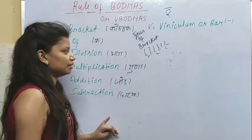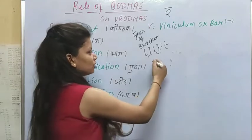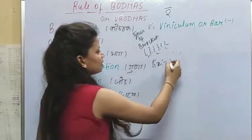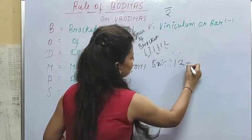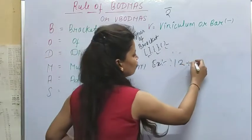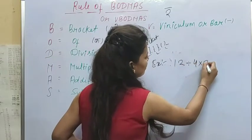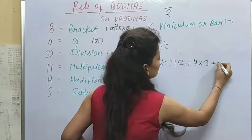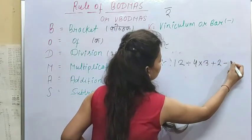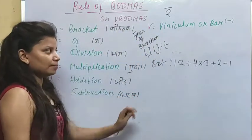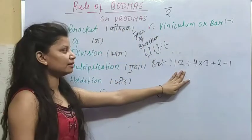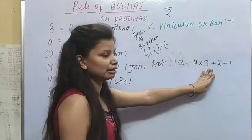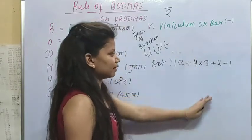If we see some examples, it will be easier to understand. Let me take an example. The expression is: 12 divided by 4, multiplied by 3, plus 2, minus 1. We have division, multiplication, addition, and minus. How do we solve it?